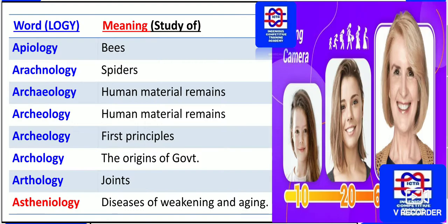Archaeology also covers the study of first principles and the origins of government. Next, we have arthrology — the study related to joints. We know arthritis relates to joints, so arthrology concerns the study of joints. Asthenology concerns diseases of weakening and aging.